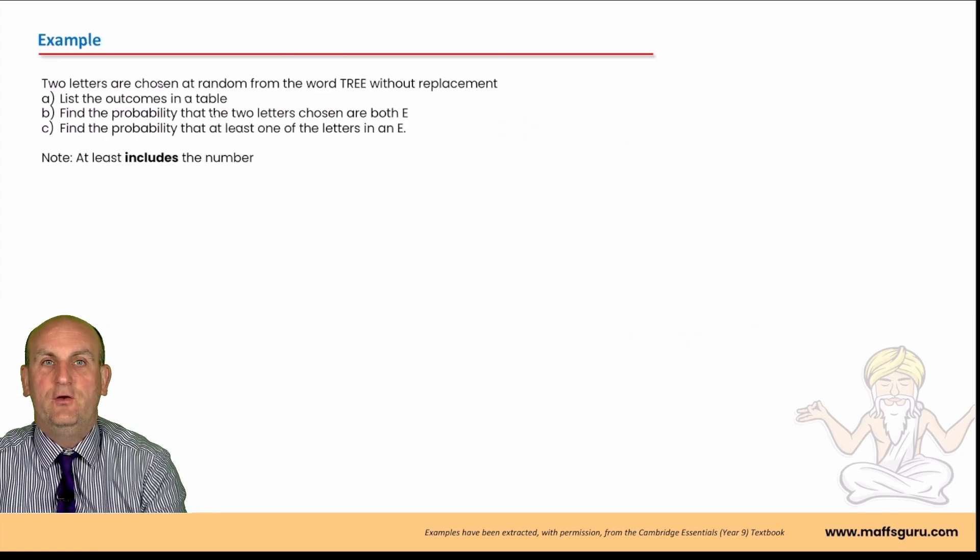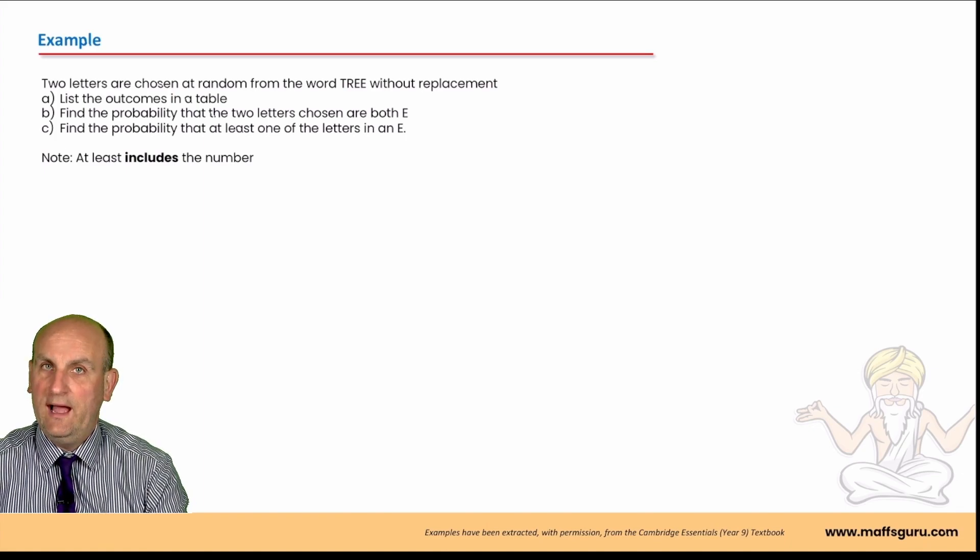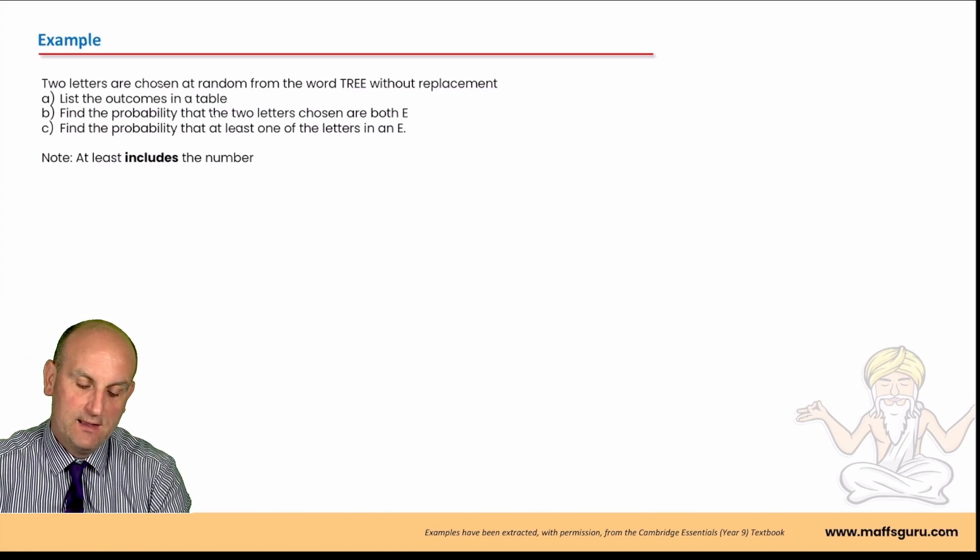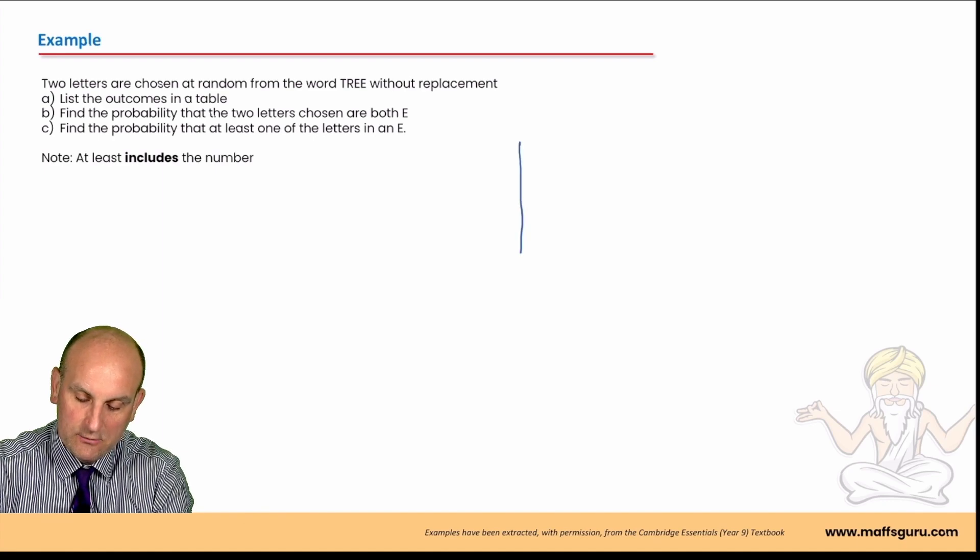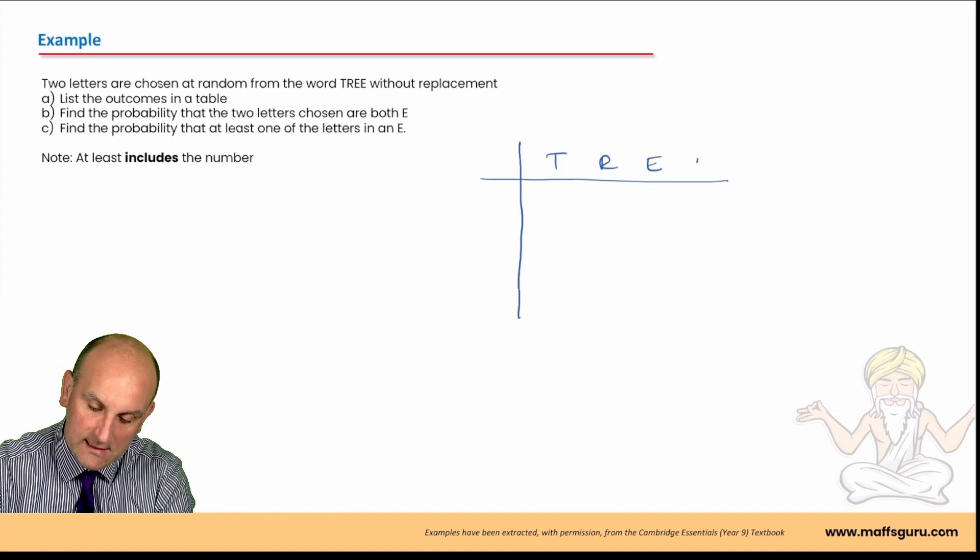Two letters are chosen at random from the word TREE without replacement. List the outcomes in the table. So, let's see what we've got here. We've got T, R, E, E. T, R, E and E.